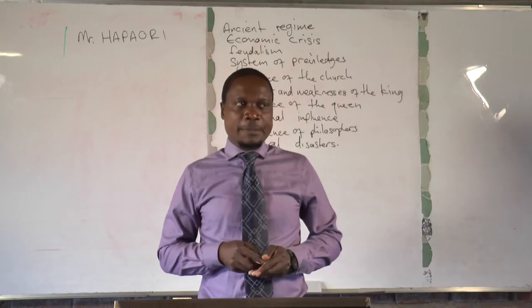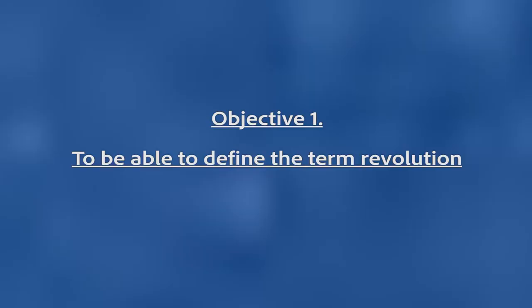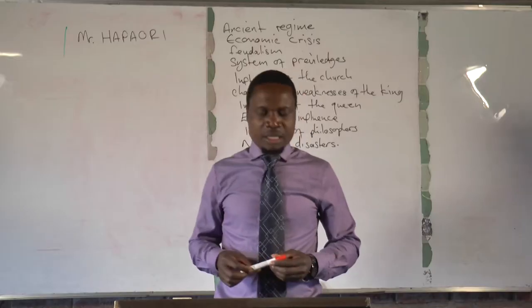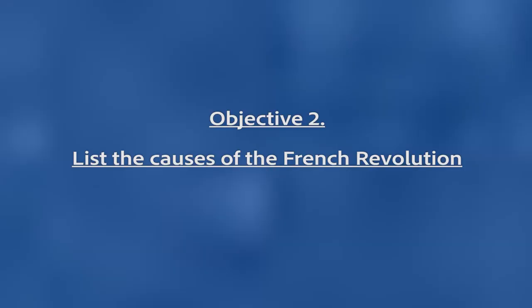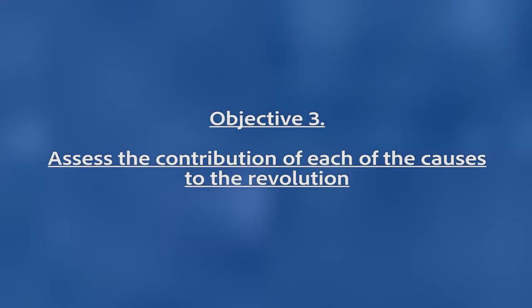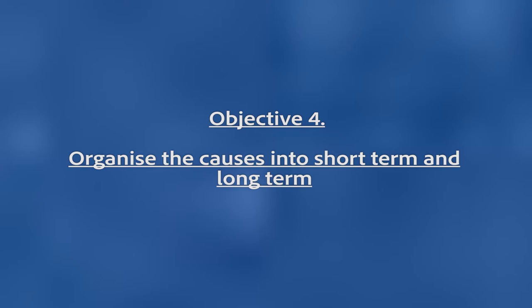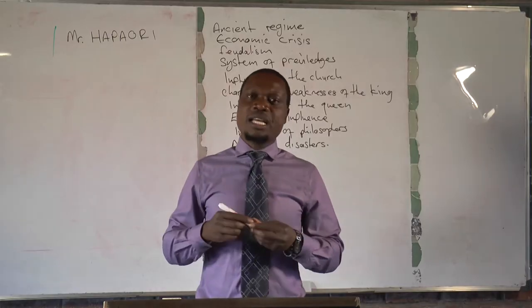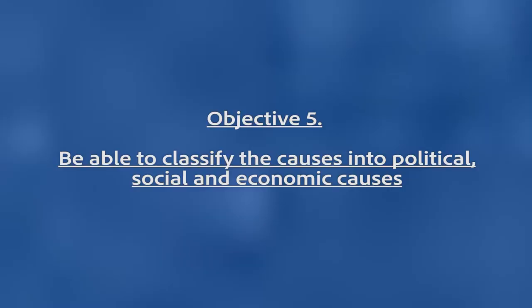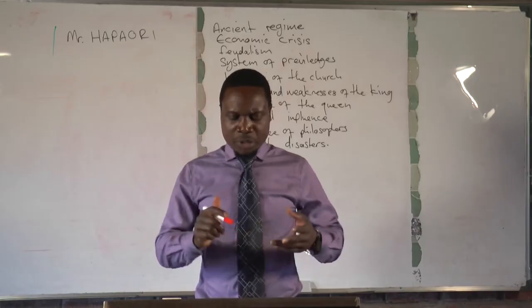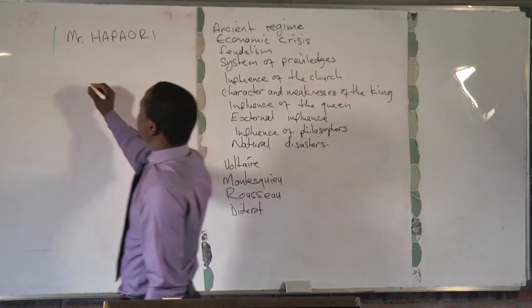Our objectives for this lesson will be to define the term revolution, to list the causes of the revolution, and to assess the contributions of each of the causes towards the outbreak of the revolution. Learners should also be able to organize these causes into short-term and long-term, as well as classify them into political, social, and economic causes.